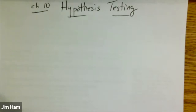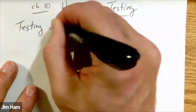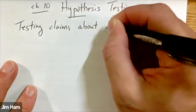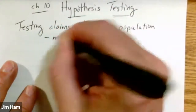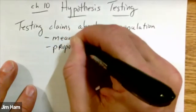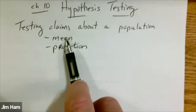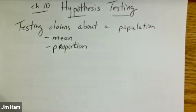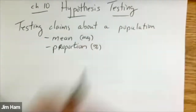Someone could make a claim that the average salary of a household is $52,000. That's just a claim. And what we're going to do as statisticians is we're going to test the claim. So another way to describe hypothesis testing is that we are going to be testing claims about a population — in this chapter, either a single population mean or a single population proportion. Someone can make a claim about an average salary or about the percentage of the vote that someone would get.